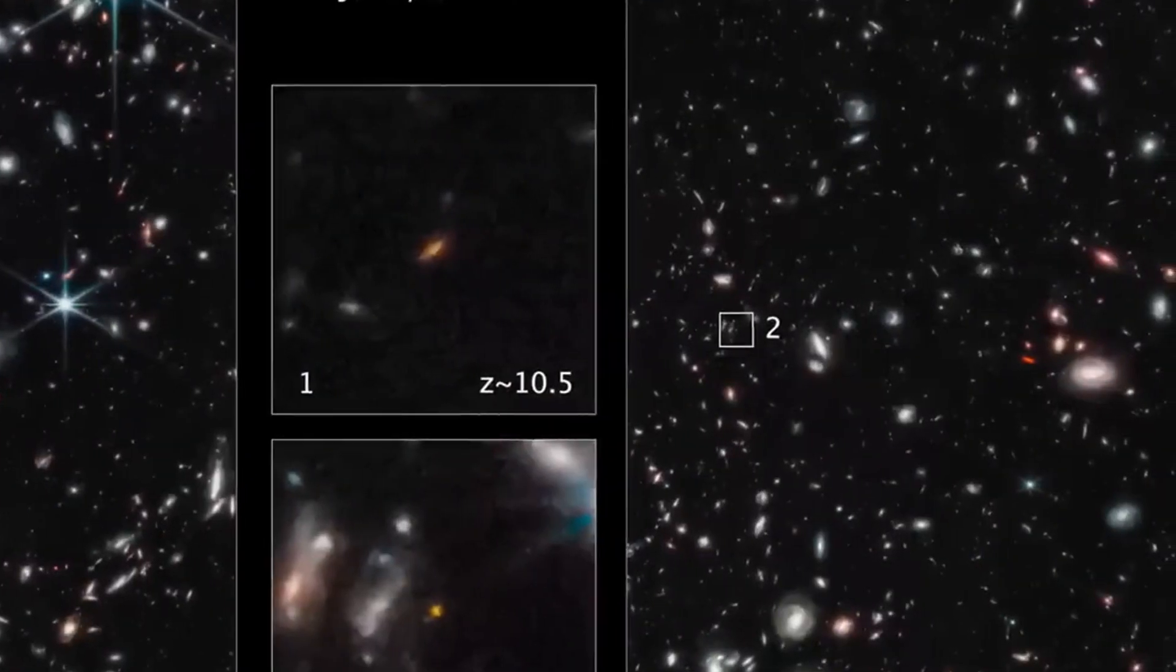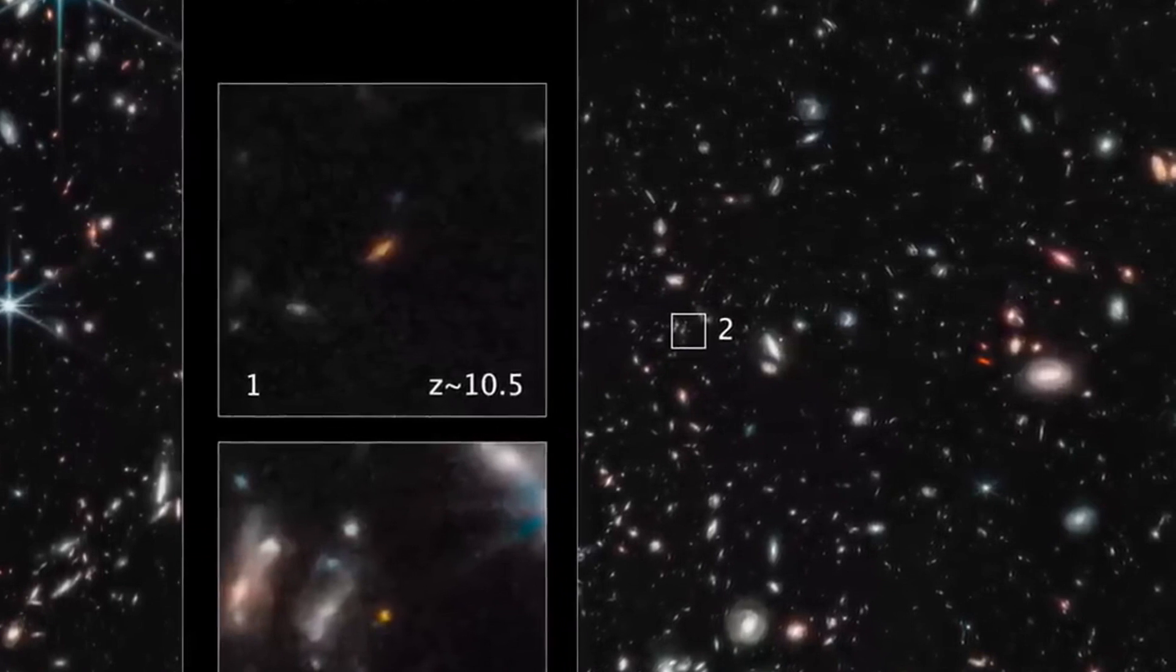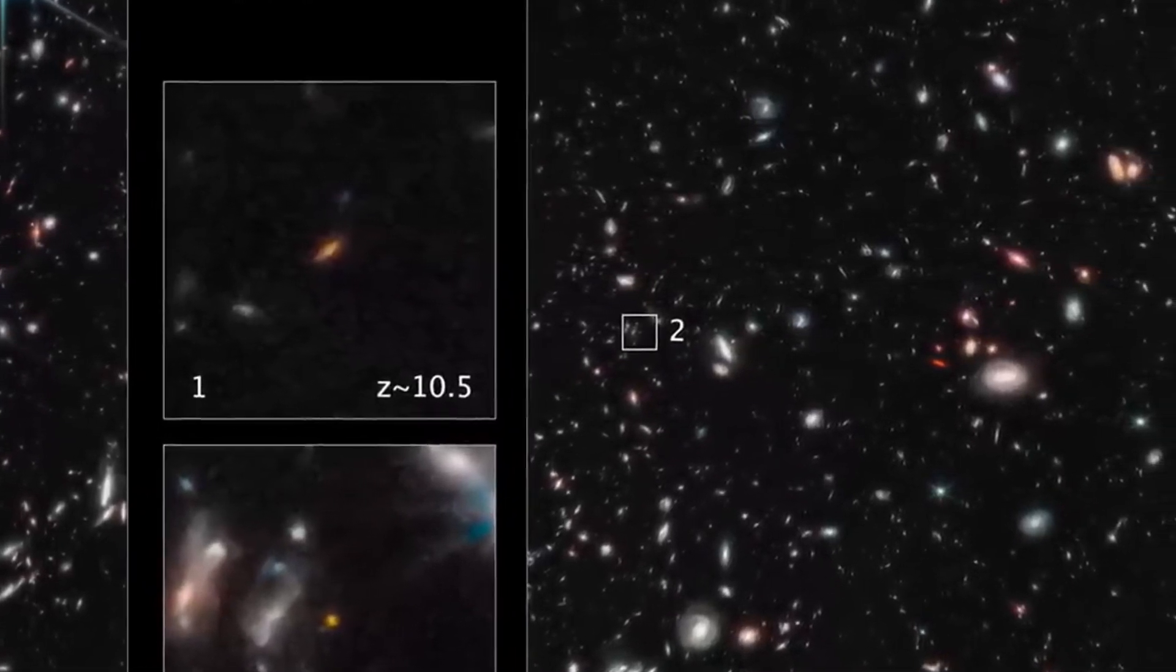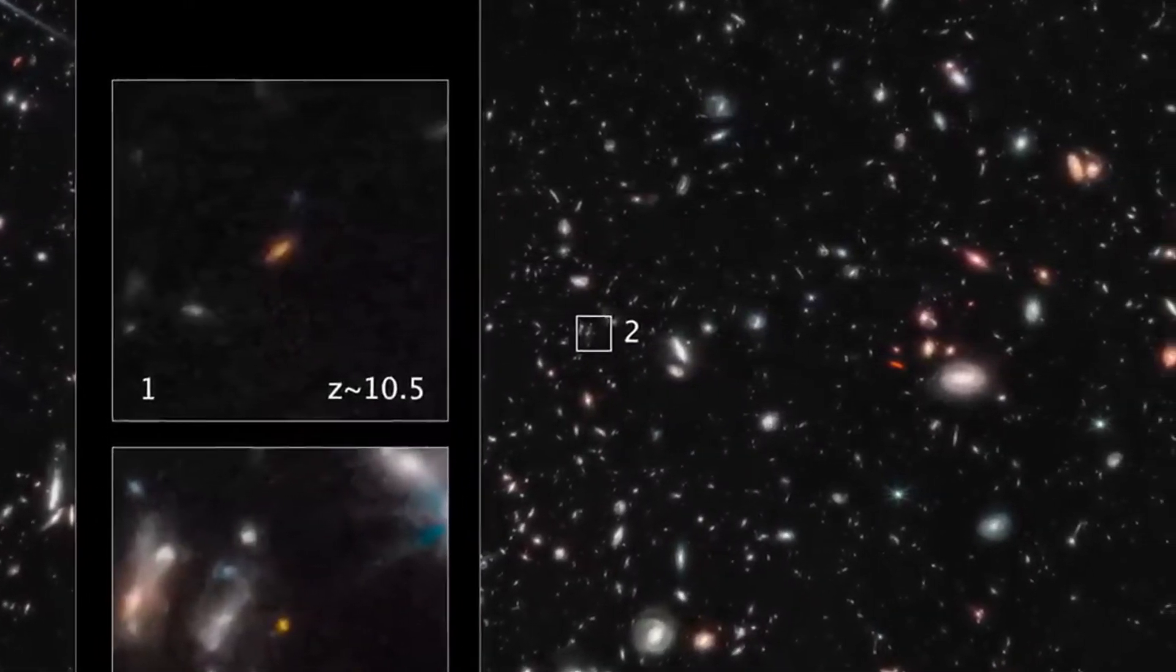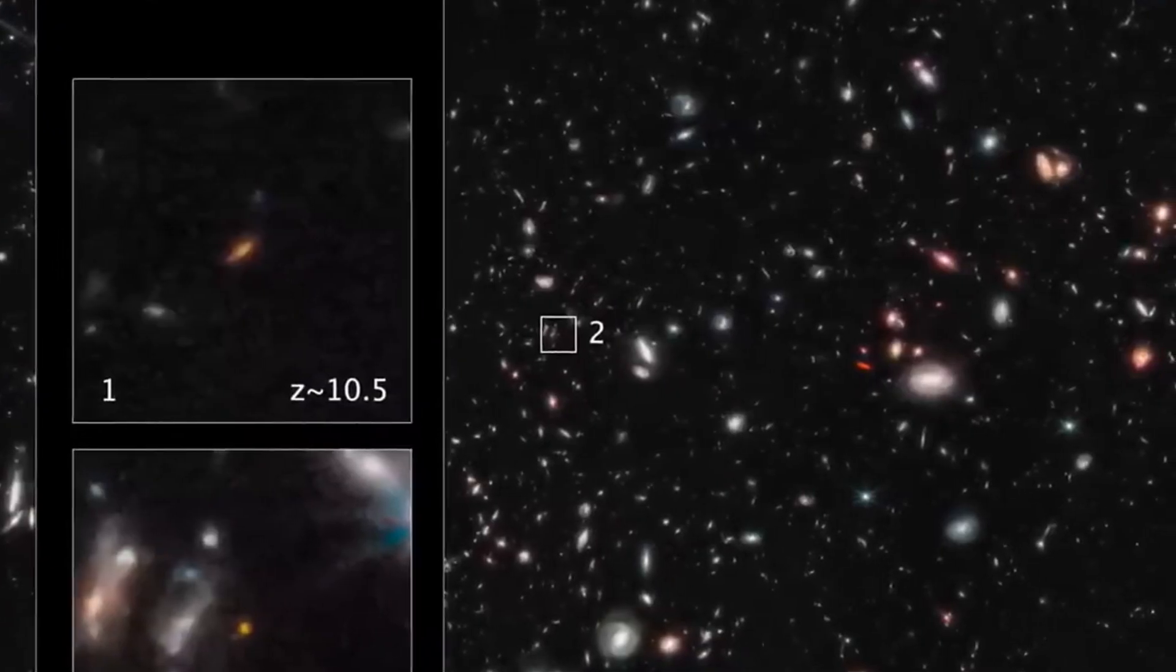Because Webb peered so far into space to capture this magnificent image, it was able to observe distant light that's been traveling across the cosmos for billions of years. As a result, closer galaxies seen in the cluster SMACS 0723 appear as they would have 4.6 billion years ago.